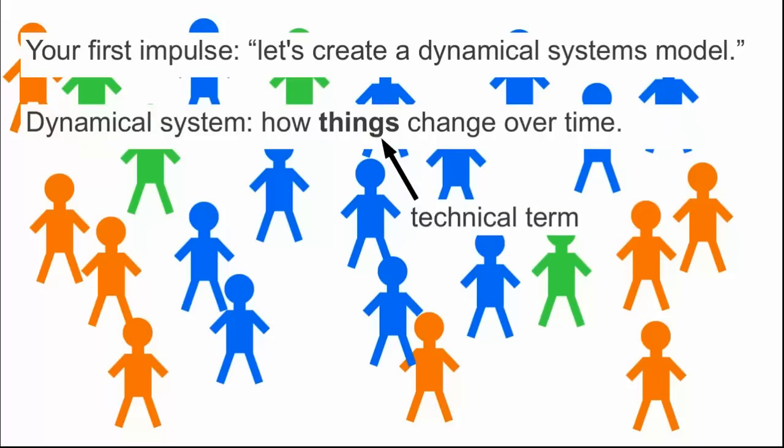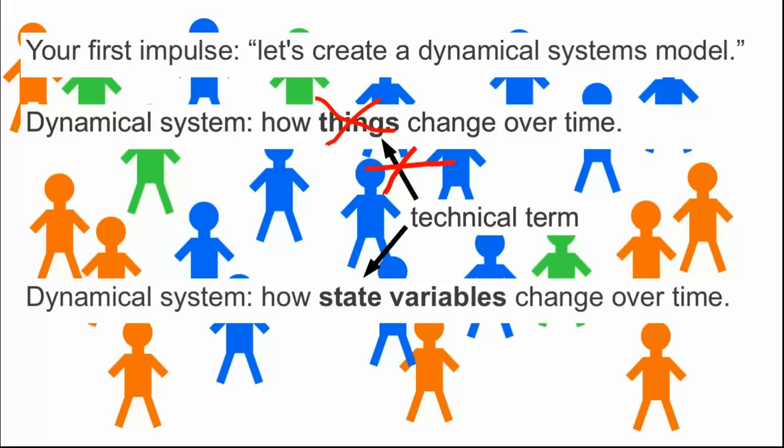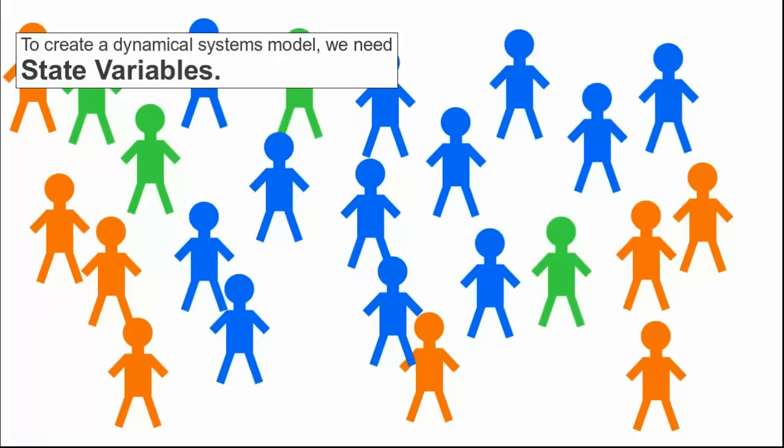A dynamical system is just a fancy way to say a model about how things change over time. Now things is an important technical term, but in case you are uncomfortable with such sophisticated terminology, we'll introduce a nicer term and call the things that change state variables. A dynamical system, then, is a model of how state variables change over time. Now, if I slip and start using the more sophisticated term things, you can remember that it's just another way of saying state variables.